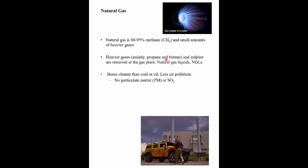Propane and butane elements are what are called natural gas plant liquids (NGLs). If you ever wondered where the propane for your barbecue or the butane in your lighter comes from, it probably came as a byproduct of the natural gas industry. One of the big advantages of natural gas is that it burns a lot cleaner than coal and oil — it produces less pollution, almost no particulate matter, and the sulfur dioxide problem is eliminated because sulfur is removed at the gas plant before it comes to your home.